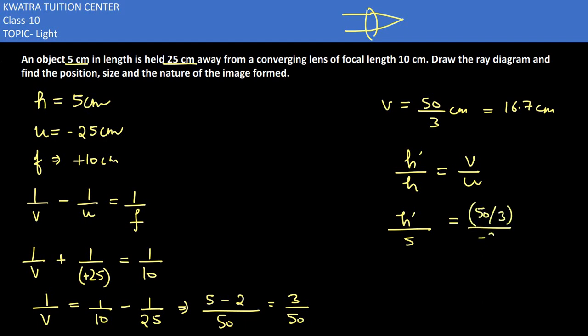u value we know, which is -25. So 5 and 25 cancel to give 5, 5 and 50 cancel to give 10. So h' is -10/3 cm, which is -3.33 cm. h' value is found.